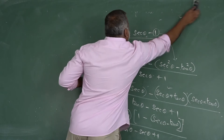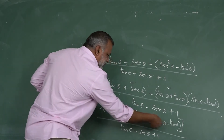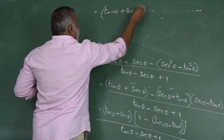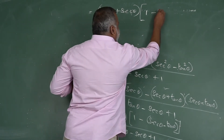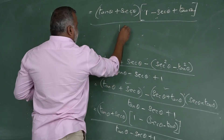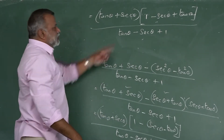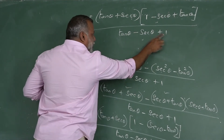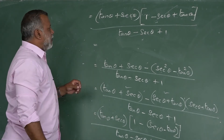Taking out the common factor tan θ + sec θ, the negative is multiplied inside to give 1 - sec θ + tan θ, divided by tan θ - sec θ + 1. Now the numerator and denominator both contain the factor (1 - sec θ + tan θ), so these cancel out.